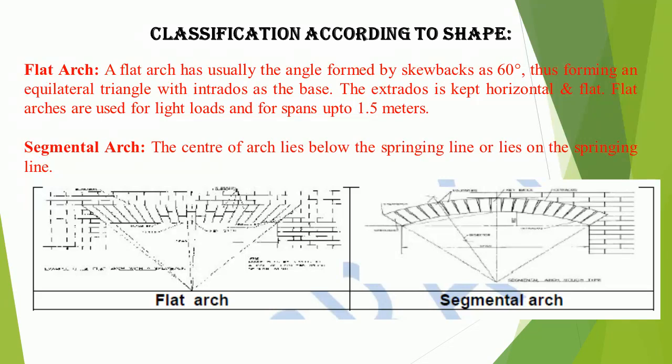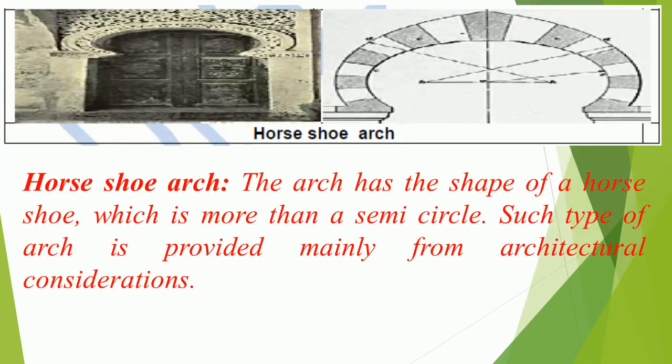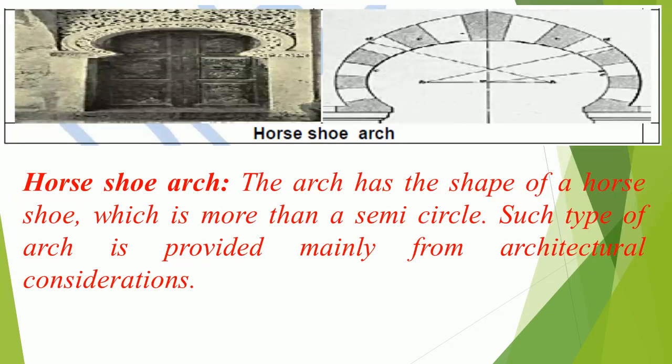Flat arches are used for light loads and for spans up to 1.5 meters. Segmental arch: the center of the arch lies below or on the springing line. Horseshoe arch: the arch has the shape of a horseshoe, which is more than a semi-circle, and is provided mainly for architectural considerations. Pointed arch: it consists of two arcs of circles meeting at the apex. The triangle formed may be either equilateral, known as a Gothic arch, or isosceles, known as a Lancet arch.